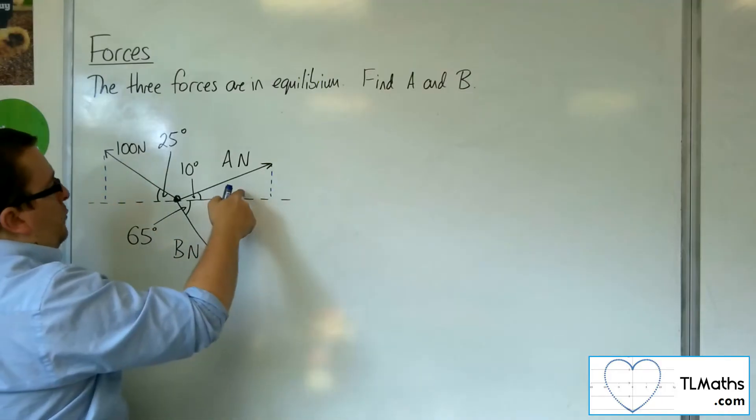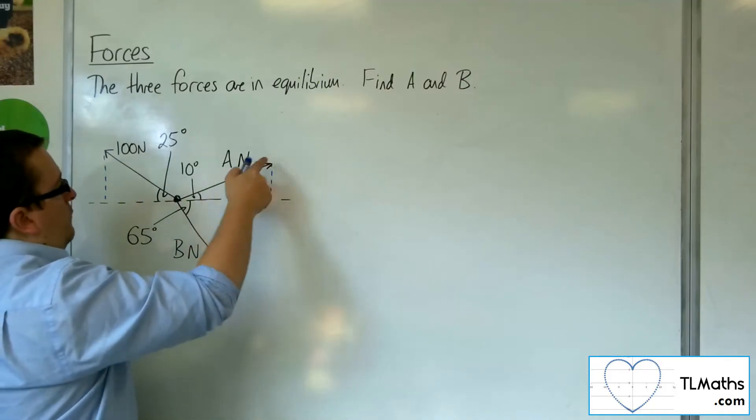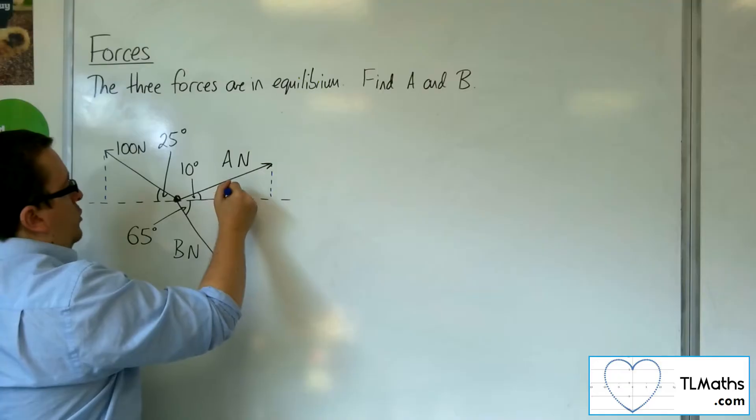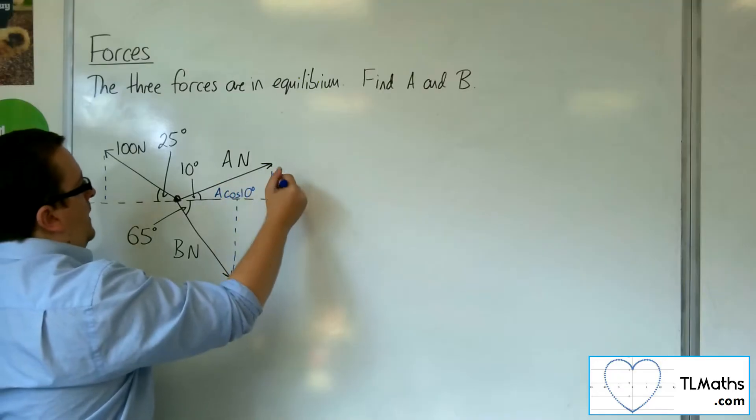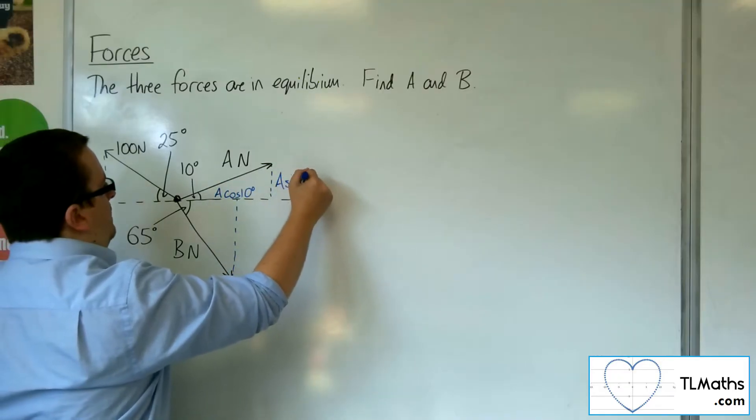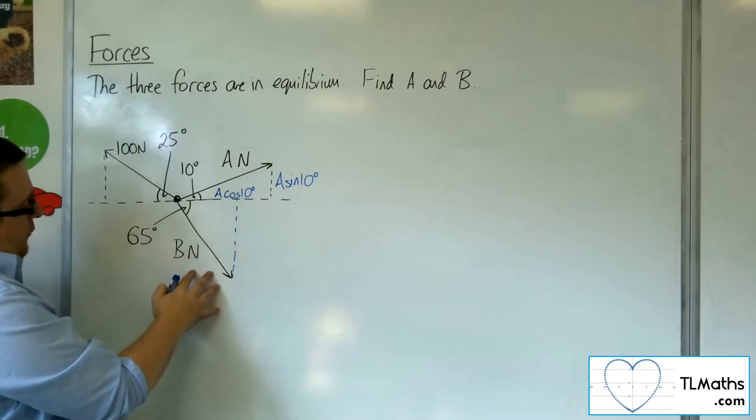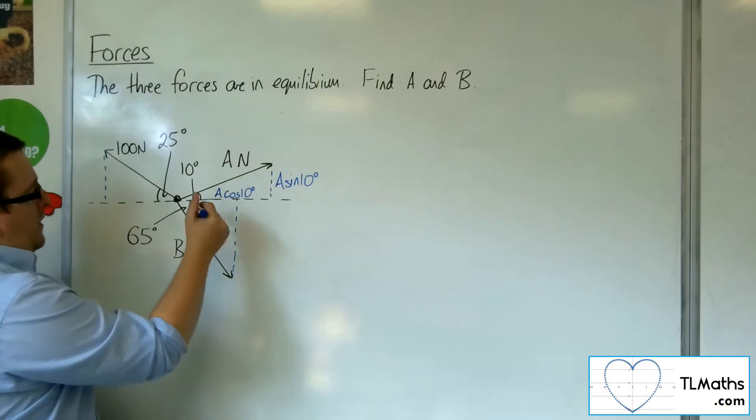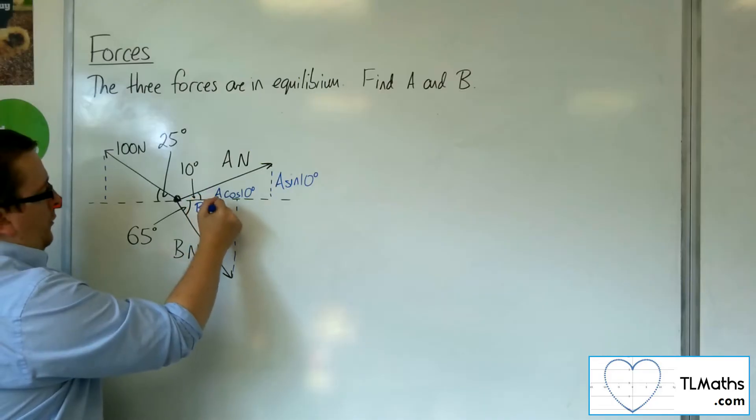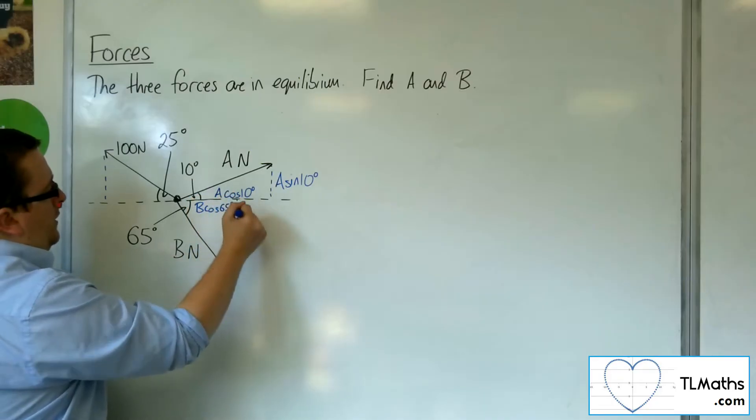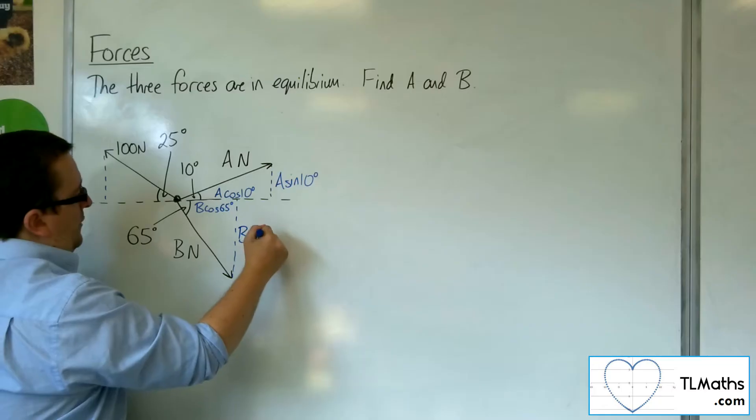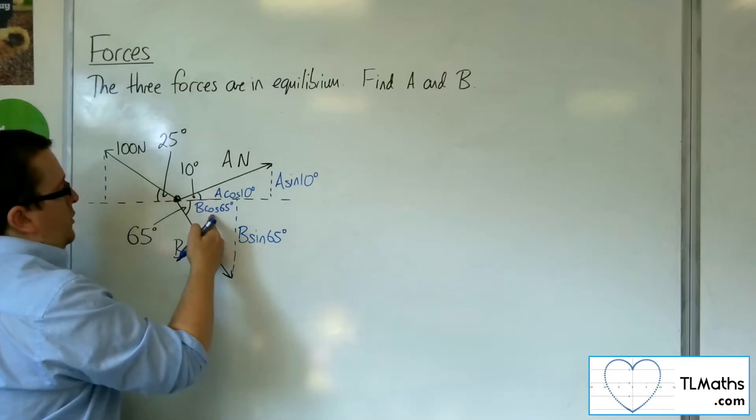So for this one, for this force here, we're going to have A cosine 10 and A sine 10 for the adjacent and opposite. For this force, we're going to have B cosine 65 and B sine 65 for the adjacent and opposite.